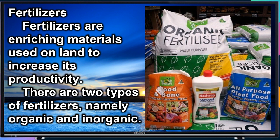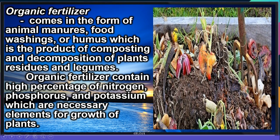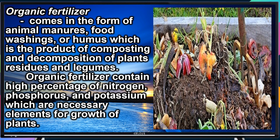The two types are organic and inorganic. Organic fertilizer comes in the form of animal manures, food washings, or humus, which is the product of composting and decomposition of plant residues and legumes. Organic fertilizer contains a high percentage of nitrogen, phosphorus, and potassium, which are necessary elements for the growth of plants.